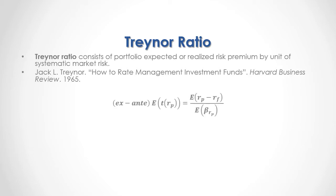As a formula, we have the ex-ante or expected portfolio return Treynor Ratio, which is equal to: in the numerator, we have the expected risk premium — the risk premium as the difference between portfolio returns minus the risk-free rate of return — which is then divided by the expected portfolio market beta.